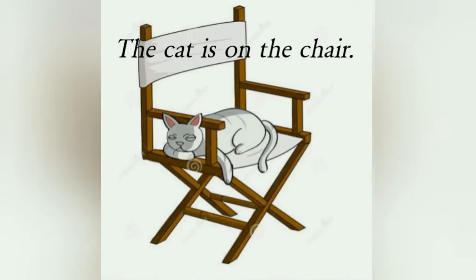For example, in this picture, the cat is on the chair. Here, 'on' is the word that tells us where the cat is, so 'on' is a preposition.